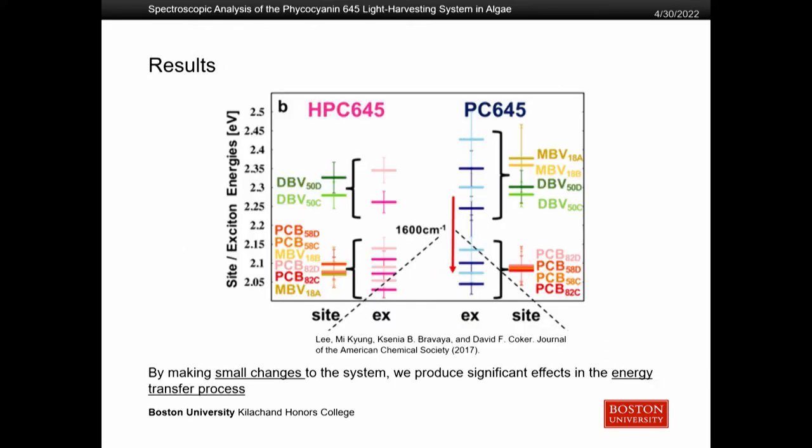What you're looking at here is a comparison between the two different systems — the HPC645 system having that hydrogen, and the PC645 system without the hydrogen. What you're looking at are site energies, and these different site energies correspond to what energy of incoming light they will interact with. The important thing to note here is the change we see in that MBV chromophore. Just by simply making a small change — removing that hydrogen — you can see significant effects in the energy transfer process. You actually see an increase in its excitation energy.